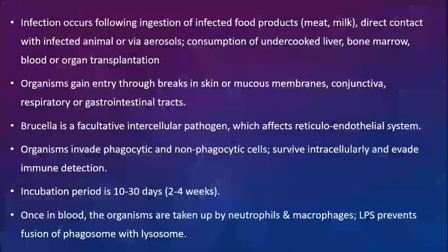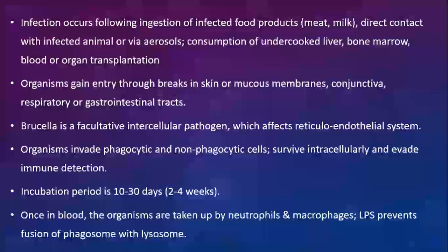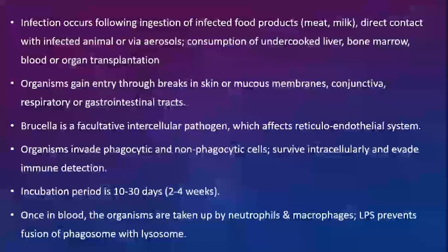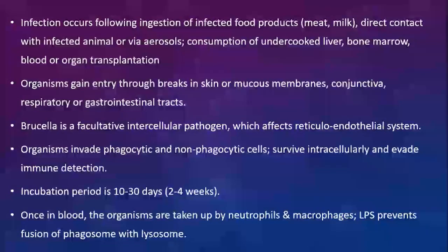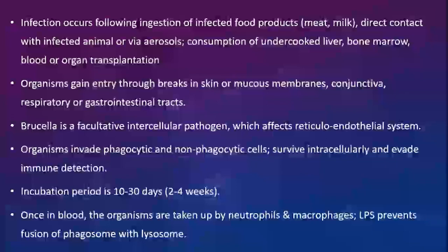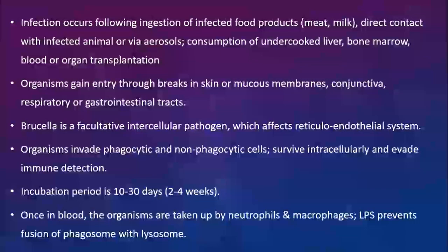Brucella is a facultative intracellular pathogen — meaning it can survive both intracellularly and extracellularly. It affects primarily the reticuloendothelial system, liver, spleen, and bone marrow. These organisms are engulfed by phagocytic cells, but rather than being killed, Brucella is able to invade and survive within both phagocytic and non-phagocytic cells, especially in mononuclear cells.